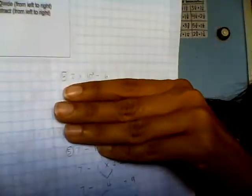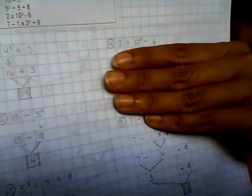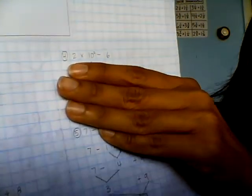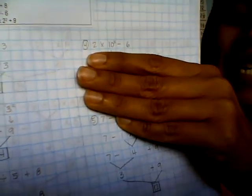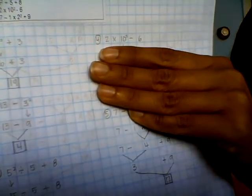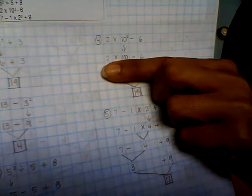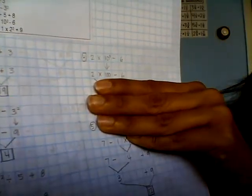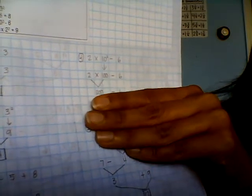The next one, number four: 2 × 10² - 6. What do we do first? That exponent, which is 10², which is 10 × 10, which is 100. So we have 2 × 100 - 6. Then we'll do 2 × 100, which is 200, minus 6 is 194.